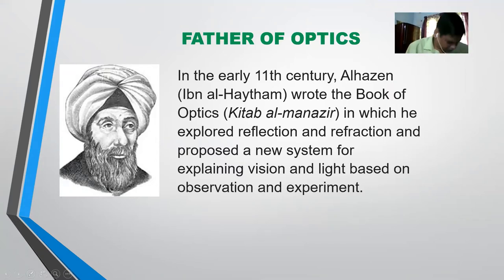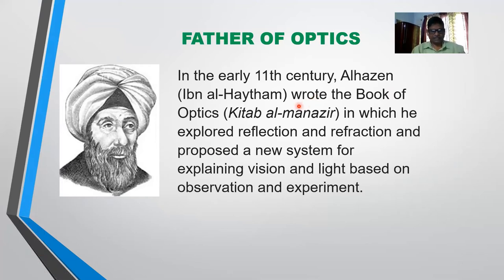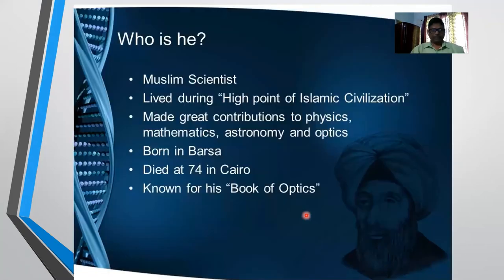What is Al-Hazen's contribution to optics — why is he named the father of optics? Before Al-Hazen, people believed that light comes from our eyes and falls on objects so that we can see them. He opposed that idea and gave the correct definition of reflection and refraction, bringing optics into a new system. He was a Muslim scientist who made great contributions to physics, mathematics, astronomy, and optics. He died at age 74 in Cairo. His most important work is the Book of Optics, which you can read for more information.